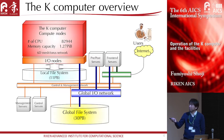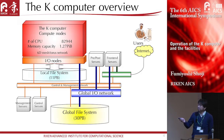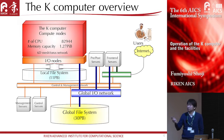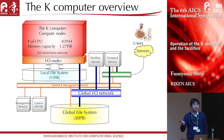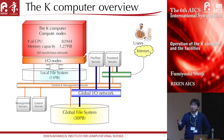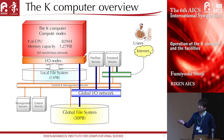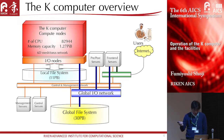The K-computer has two types of storage: one is the local file system and the other is the global file system. The local file system is used as a scratch pad for file staging, connected between the compute node via I/O node. The global file system holds user permanent files. The local file system has broad bandwidth but not large capacity, while the global file system has large capacity but not broad bandwidth.